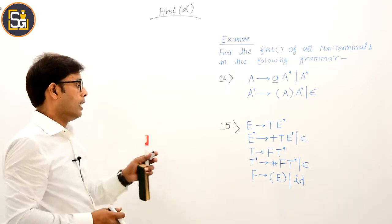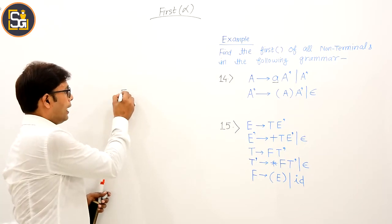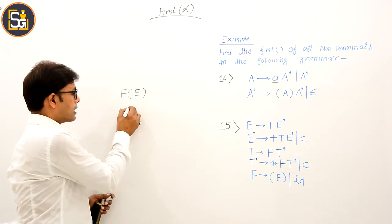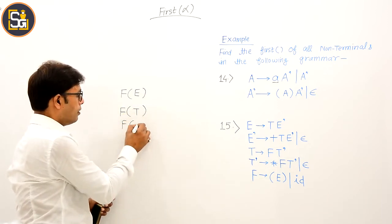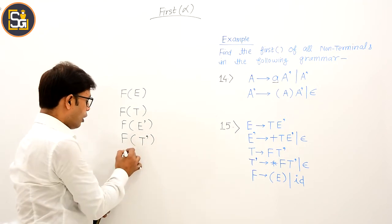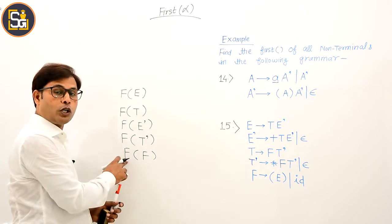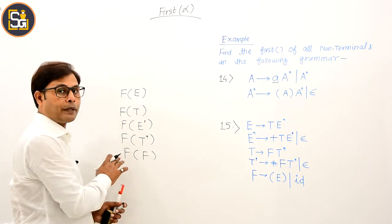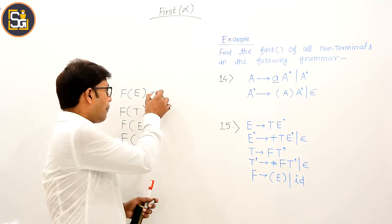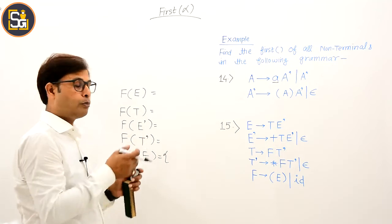Now come to the next question. Is problem mein jo non-terminals use huye hain, woh hain: E, T, E-dash, T-dash, aur F. Hum inka FIRST nikalenge. Mein bottom to top jaane ki koshish karunga. Yahaan par isse 'F' aur isse 'f' mein confuse mat hona — yeh 'f' jo hai FIRST ko represent kar raha hai, jabki yeh neeche wala 'F' non-terminal F hai.